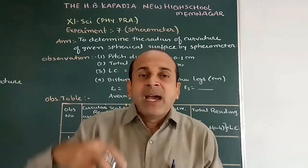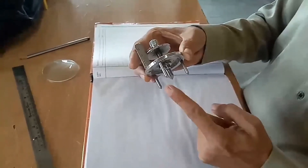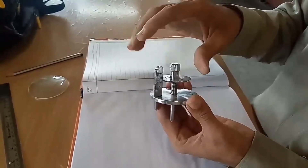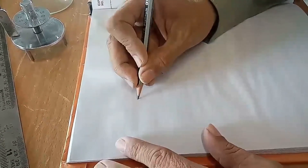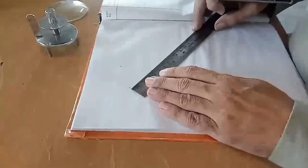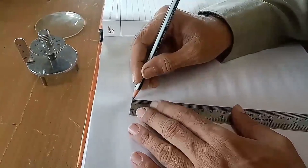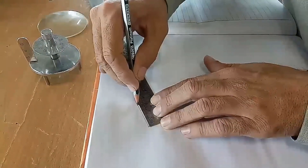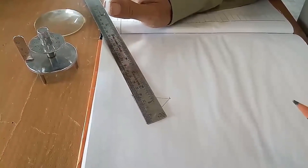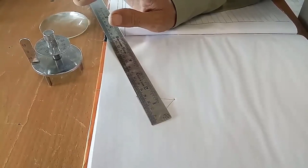To measure the distance between two legs of the spherometer, open it by 2 to 3 turns and take the impression of the tips of the legs on a plane surface. Join these three points, draw a triangle, and measure the distance between two legs. The distances are: L1 = 4.2 cm, L2 = 4.2 cm, and L3 = 4.2 cm. So the average distance L is also 4.2 cm.